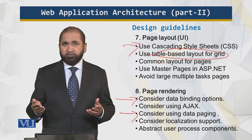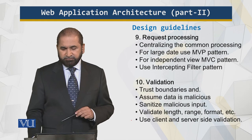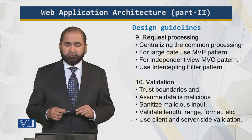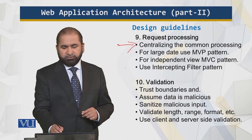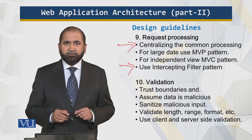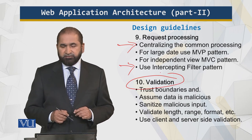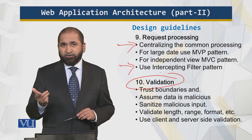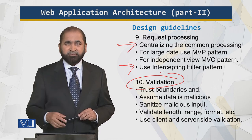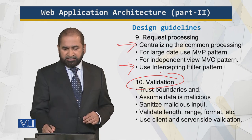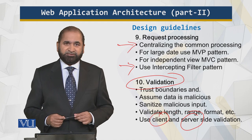For page rendering, use binding options, data paging, and Ajax — there are many tools and techniques available. For request processing, centralize common processing and use the Intercepting Filter pattern. For validation, establish trust boundaries: check the length of passwords, check the length of CNIC numbers, check data types, and do this at both the client end and the server end. Do not let your system crash.